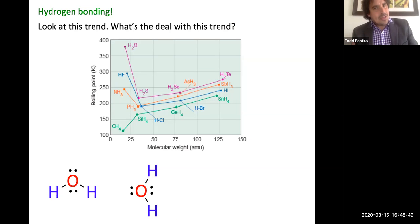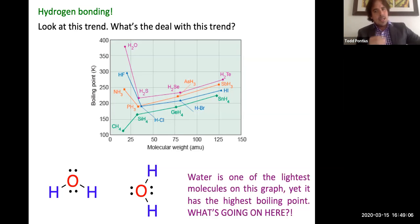Now, hydrogen bonding. Let's look at this trend. What's the deal with this trend? So look at all these various molecules we have. On the y-axis, we have the boiling points. Again, reflective of the intermolecular forces. On the x-axis, we have the molecular weights. Notice here that the highest boiling point of all these molecules is H2O. Now, something to note about H2O with respect to its mass. It's one of the lightest molecules on here, and yet it has the highest boiling point.